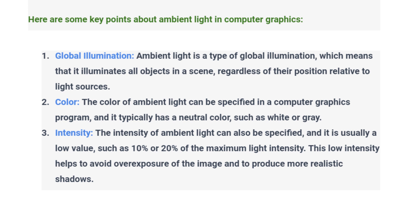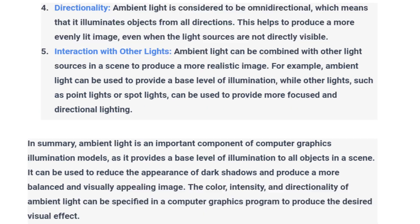Intensity: The intensity of ambient light can also be specified, and it is usually a low value, such as 10% or 20% of the maximum light intensity. This low intensity helps to avoid overexposure of the image and to produce more realistic shadows.